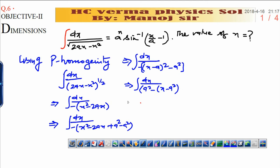Which can be written as this identity: integration of dx a square minus x square, which can be written as sin inverse of...